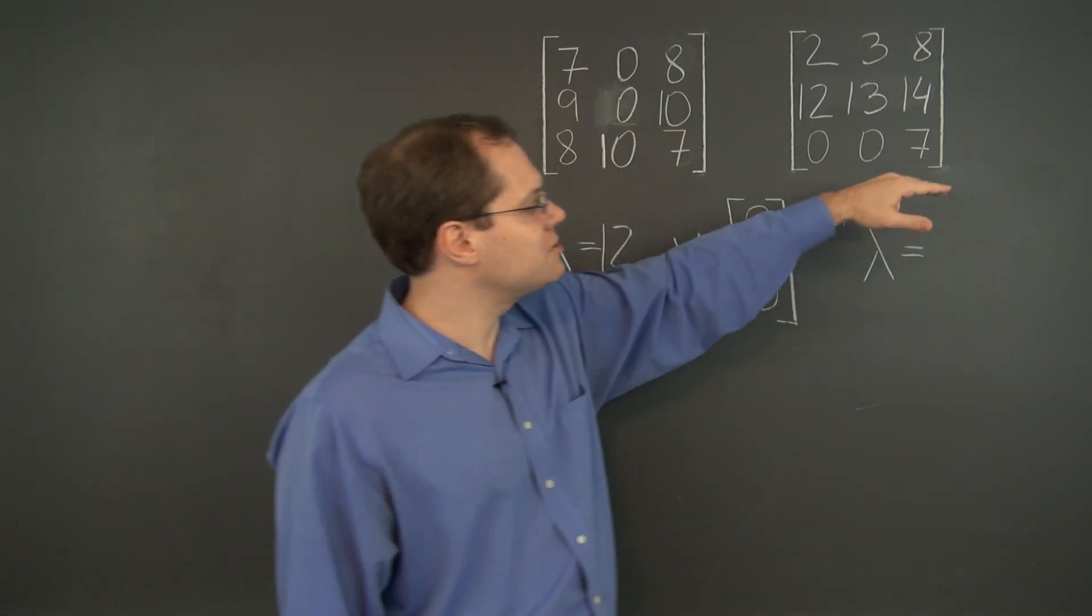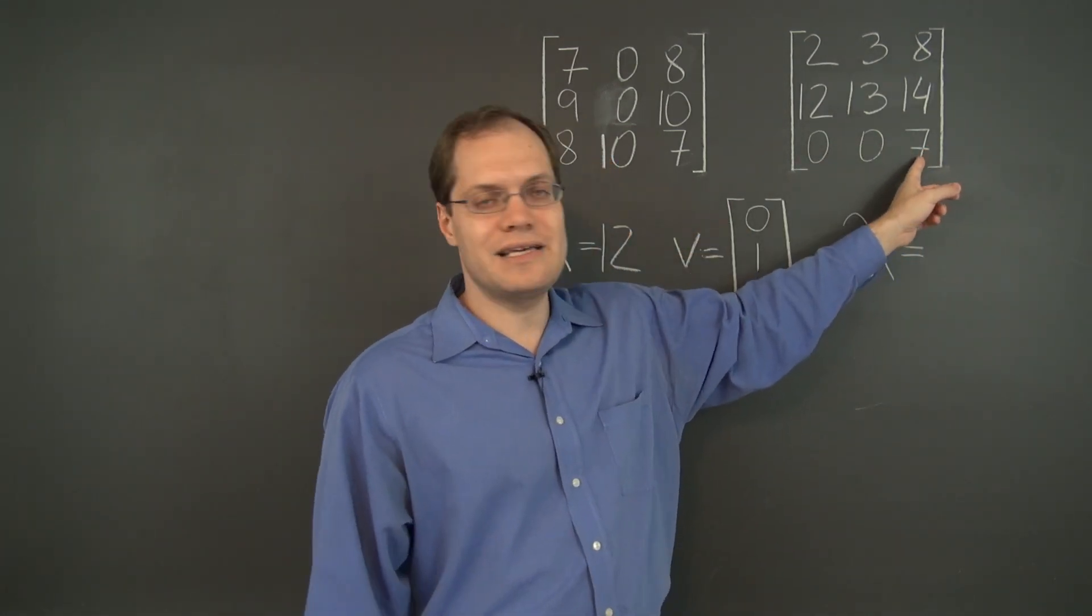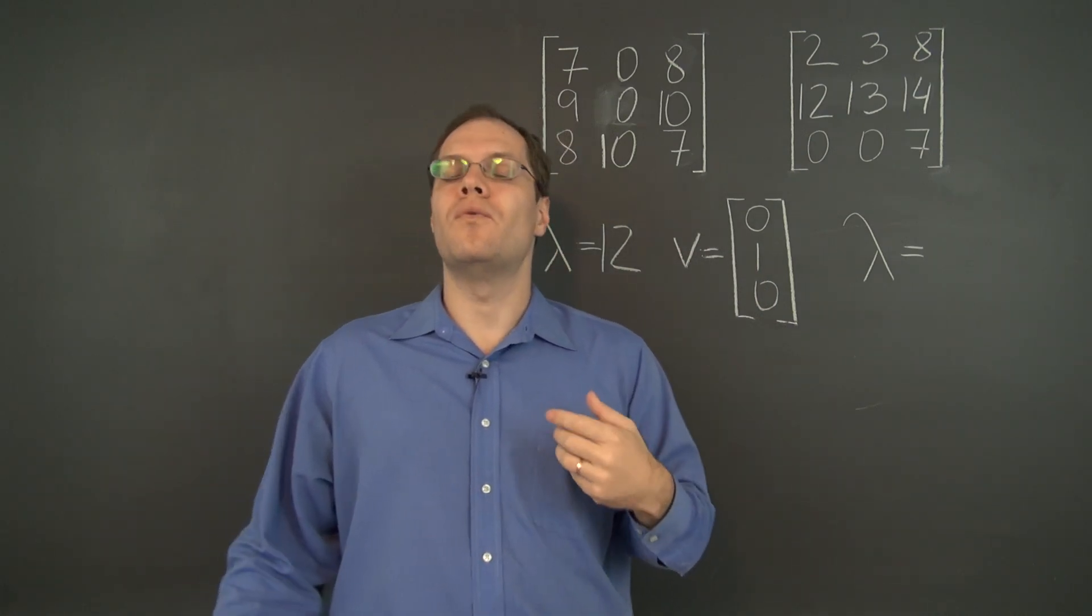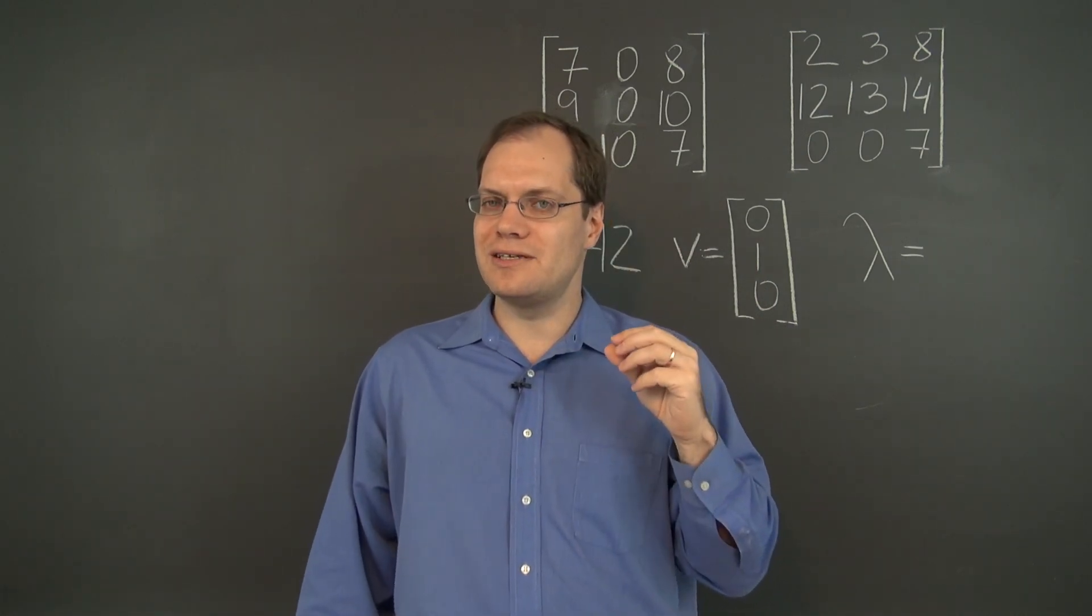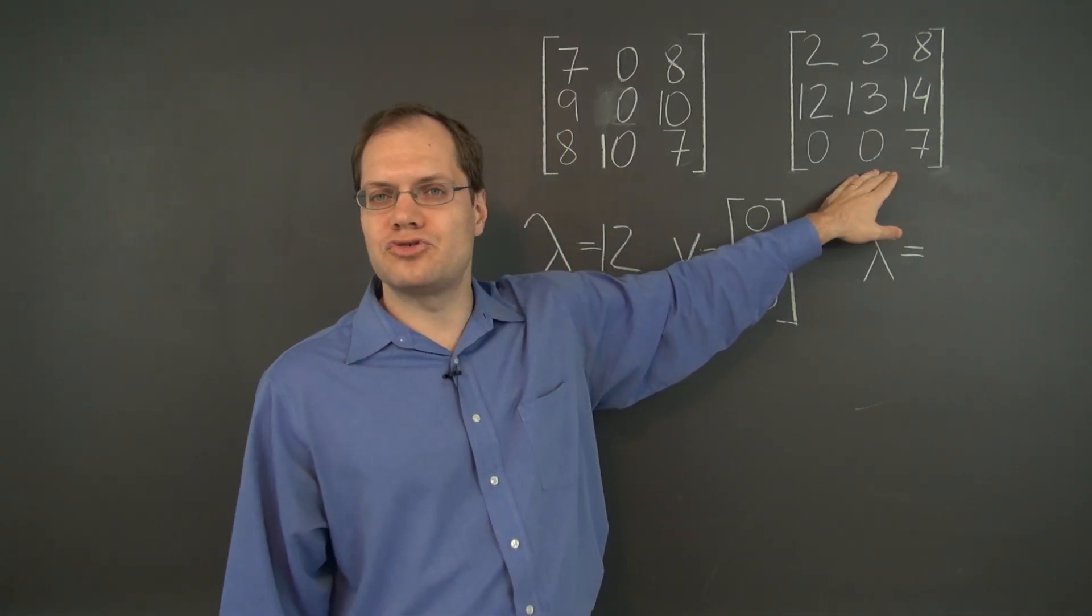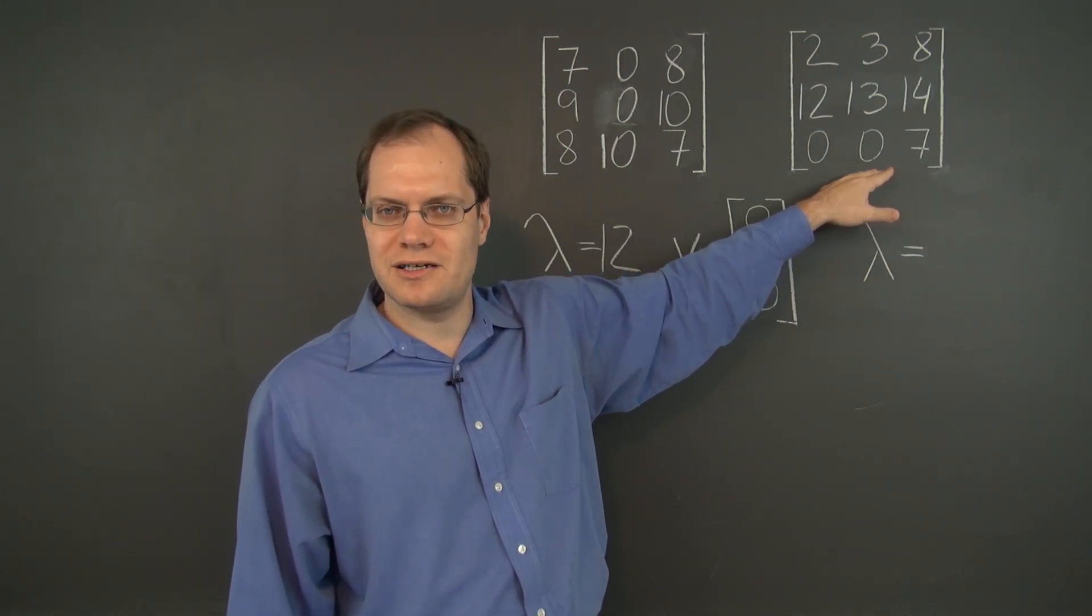So the only thing that we're able to say in this case is that 7 is an eigenvalue and we don't know the corresponding eigenvector. Why is 7 the eigenvalue? Why are we still able to make that claim? Well, that's because if we were to consider the transpose of this matrix—imagine what the transpose of this matrix looks like—